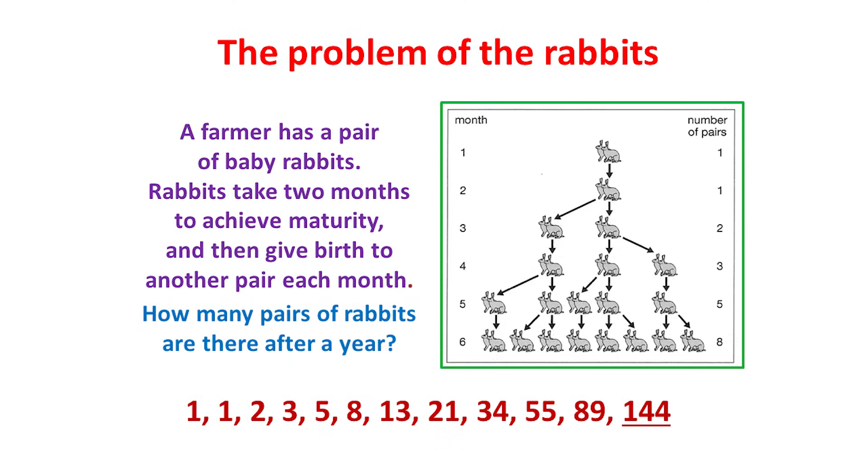Fibonacci's book contains many arithmetical problems, including his famous one about rabbits. A farmer has a pair of baby rabbits. Rabbits take two months to achieve maturity, and then give birth to another pair each month. How many pairs of rabbits are there after a year? For the first two months, there's just the original pair. But in month three, a new pair arrives, giving two in total. In month four, the original pair produces another pair, but the new pair hasn't yet produced, so there are three pairs. And so on. And as you can see, the numbers of pairs after successive months are the Fibonacci numbers. In fact, it's as easy as 1, 1, 2, 3.